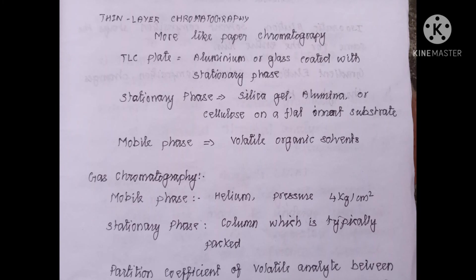In thin layer chromatography (TLC), it is similar to paper chromatography but uses aluminium or glass plates coated with the stationary phase — silica gel, alumina, or cellulose. The mobile phase can be organic solvents whose polarity can vary depending on the analyte being analyzed.